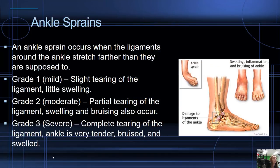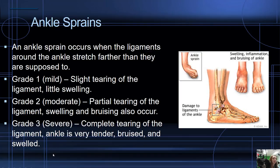Ankle sprains. An ankle sprain occurs when the ligaments around the ankle stretch farther than they were originally designed to. There are three grades of ankle sprains. The first one is grade 1, which is very mild — it's just slight tearing of the ligament.